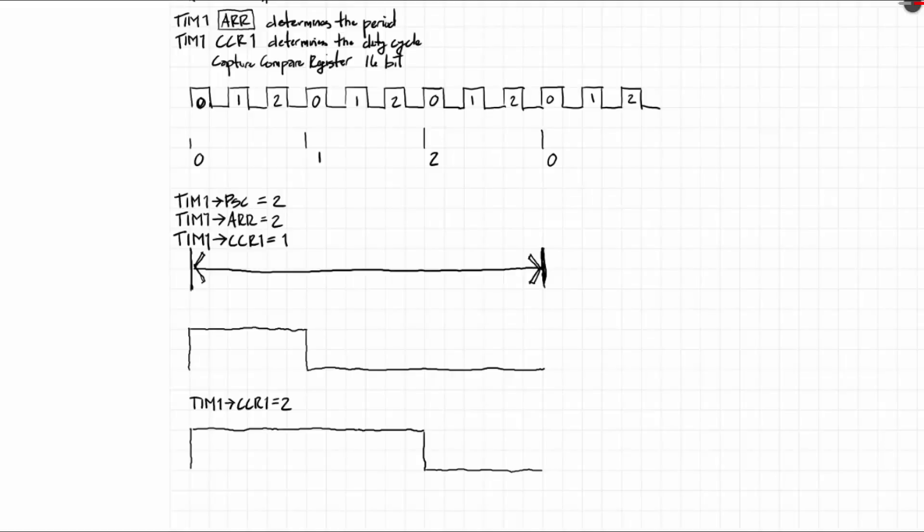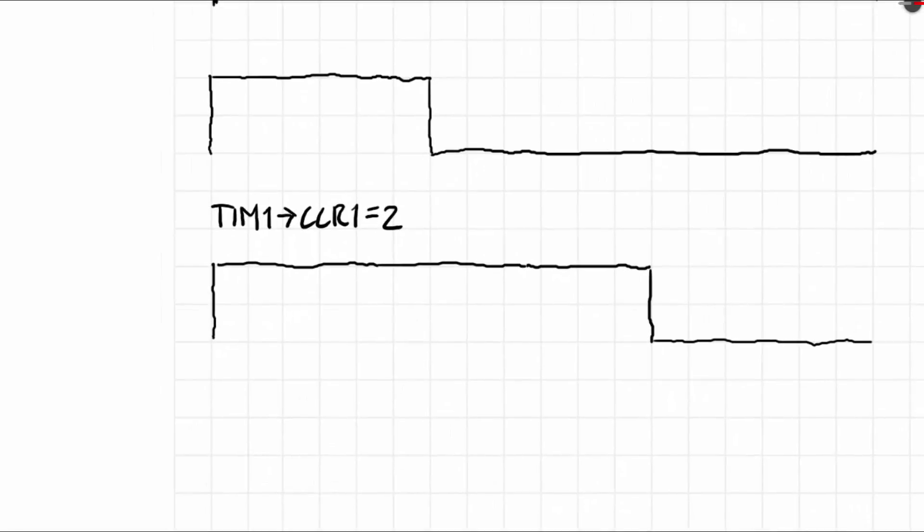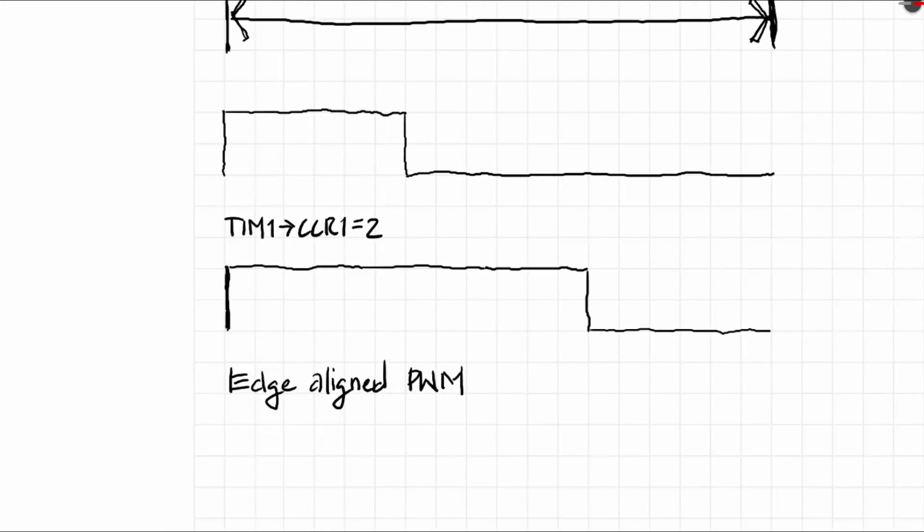This type of PWM that I'm demonstrating here is called the edge-aligned PWM, meaning that the period starts at the edge of the PWM signal. You also have center-aligned modes. That was also called phase-correct mode in the AVR series, but we'll discuss that in a later video.